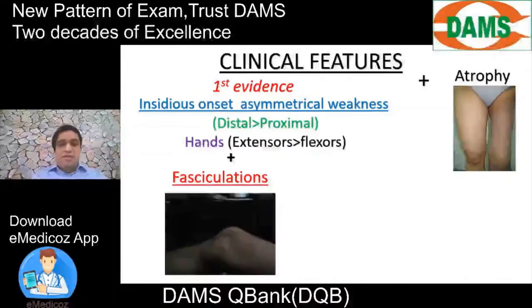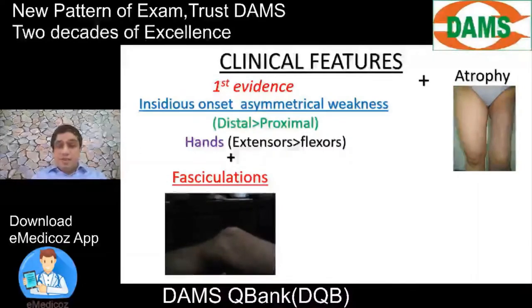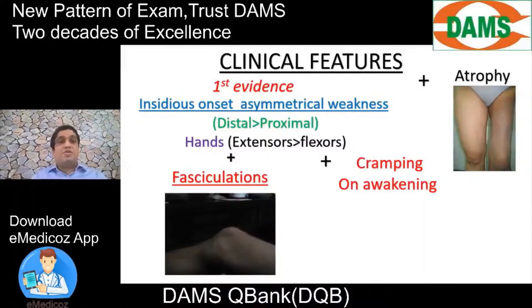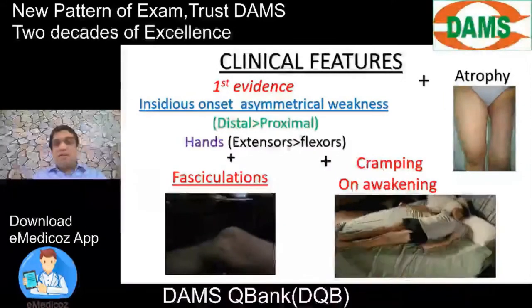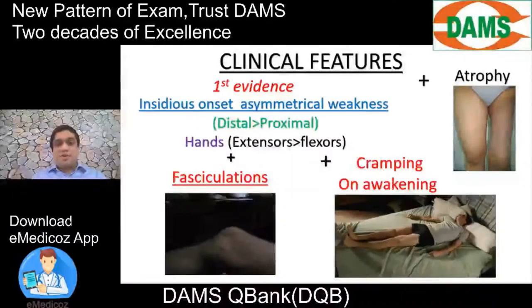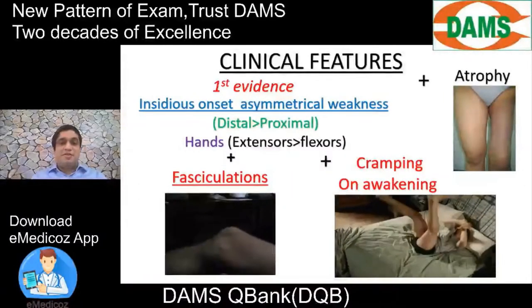When the lesion is at the anterior horn cell level, visible and palpable muscle twitching — fasciculations — can be seen. In this video, fasciculations are visible in the thigh muscles. If fasciculations occur overnight, the next day the person experiences cramping pain on awakening; when waking up, the patient is restless due to this morning cramping pain.